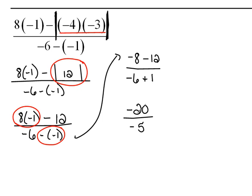Now we have a division problem. We have negative 20 divided by negative 5. So we just do the division. 20 divided by 5 would be 4, and because the signs are the same, the answer is positive.